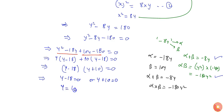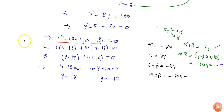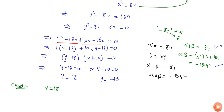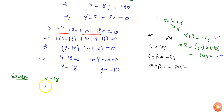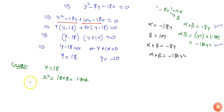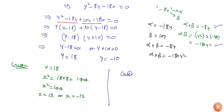From here, either Y minus 18 equals 0, giving Y equals 18, or Y plus 10 equals 0, giving Y equals minus 10. There are two possibilities. Case 1: when the larger number Y equals 18, then X squared equals 8 times 18, which is 144. So X squared equals 144, meaning X can be plus 12 or minus 12.